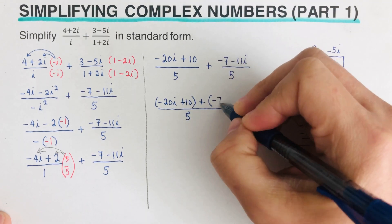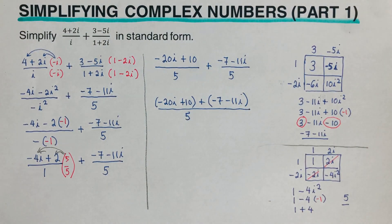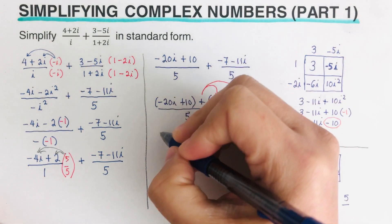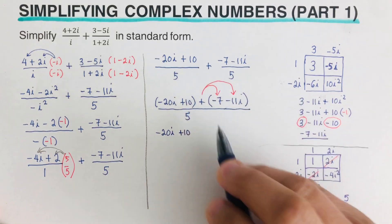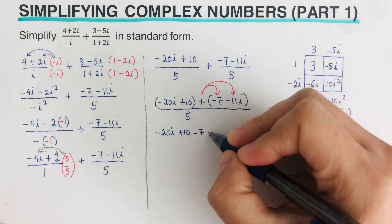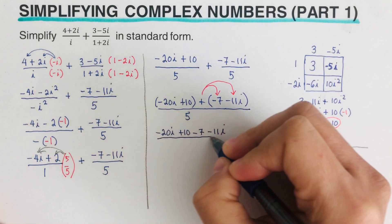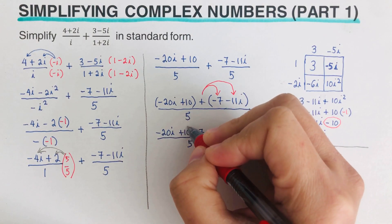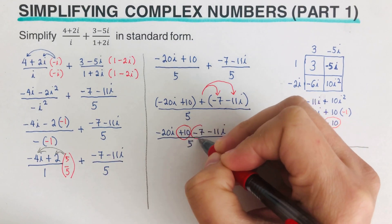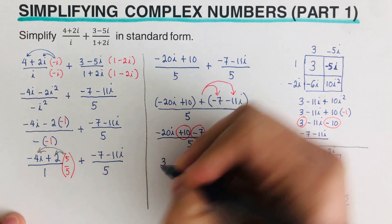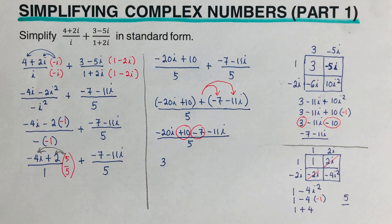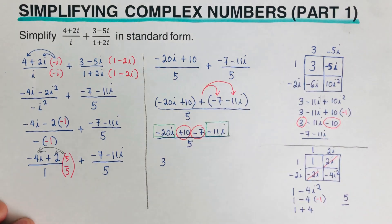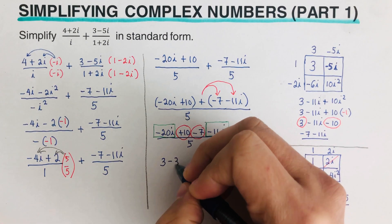We distribute the plus sign to each term in the second numerator, giving us negative 20i plus 10 minus 7 minus 11i, all over 5. Combining like terms: the constants are 10 minus 7, which is 3. The i terms are negative 20i plus negative 11i, which equals negative 31i.